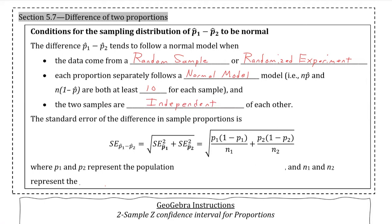And thirdly, we also want to make sure that the two samples are independent of each other. So long as we have these three conditions, then we can work with confidence intervals.